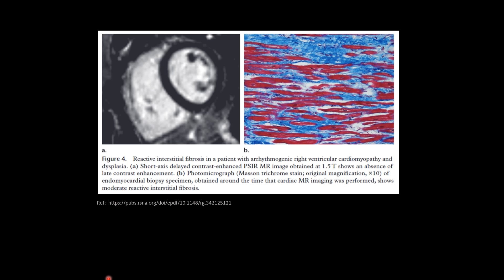Here is an example: this is a late gadolinium enhancement image and we are not seeing much enhancement, but on histopathology there is significant fibrosis. Sometimes when diffuse fibrosis occurs, the enhancement might not be obvious — there may be very subtle enhancement and we won't be sure whether it is enhancing or not. In such conditions, if we do T1 mapping, the mapping values will be high.